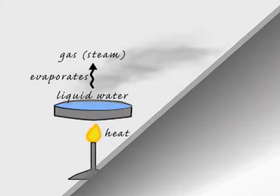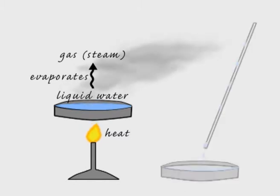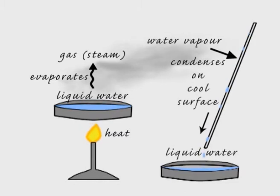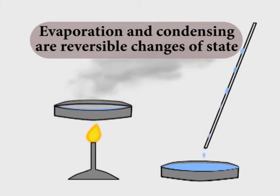When you heat liquid water up, it evaporates, becoming water vapor. And when you cool the water vapor down, it condenses into liquid water again. Evaporation and condensing are reversible changes of state.